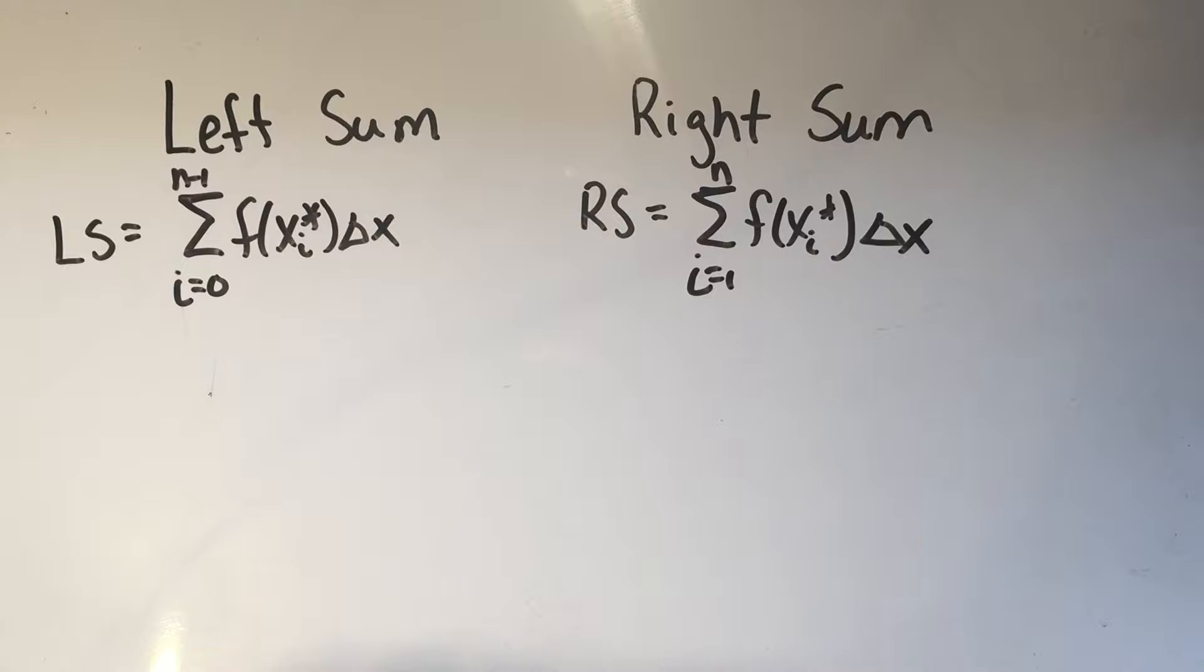And here's how you tell the difference. These two things are the exact same equation except for the indices. Namely, this one starts at zero and sums to n minus one. This sum starts at one and sums to n.